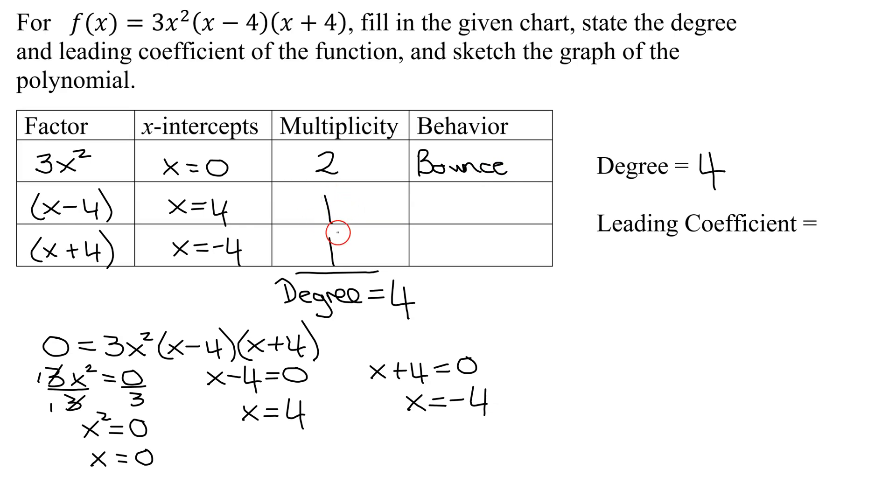But if the multiplicity is odd, the graph will cross the x-axis at that intercept. So the first one is going to bounce. These two, it's going to cross.